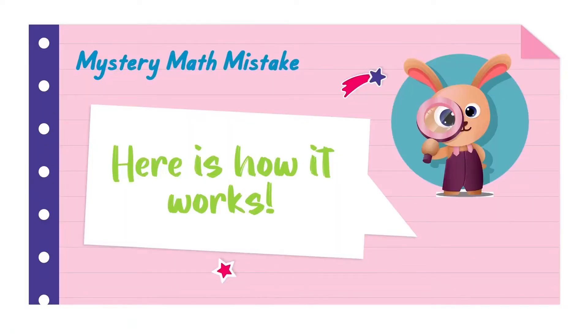For the mystery math mistake, here's how it's going to work. We're going to be given a problem that Dodson figured out and we're going to look carefully at how Dodson figured out the answer, and we're going to have to agree or disagree to see if Dodson did it right. If you notice that he did not do it right, that means we found a mystery math mistake and we're going to have to help him fix it to make it right.